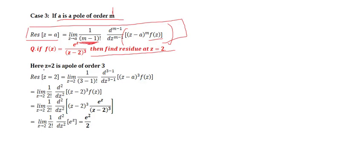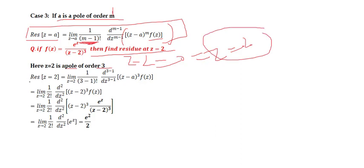Here z = 2 is a pole of order 3, found by setting (z−2)³ = 0. So residue at z = 2 using the formula with m = 3.